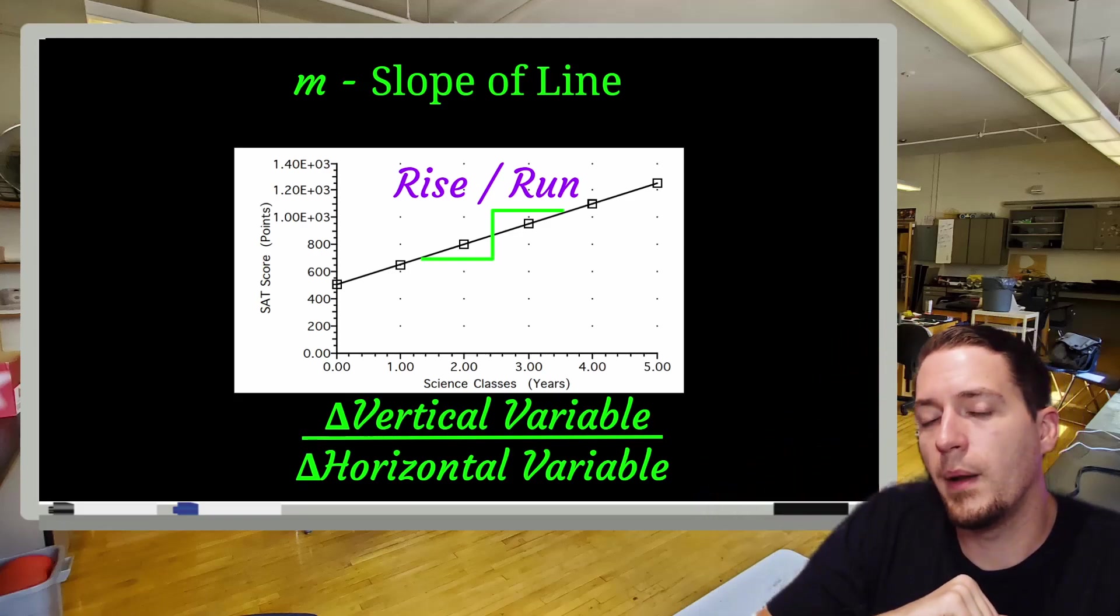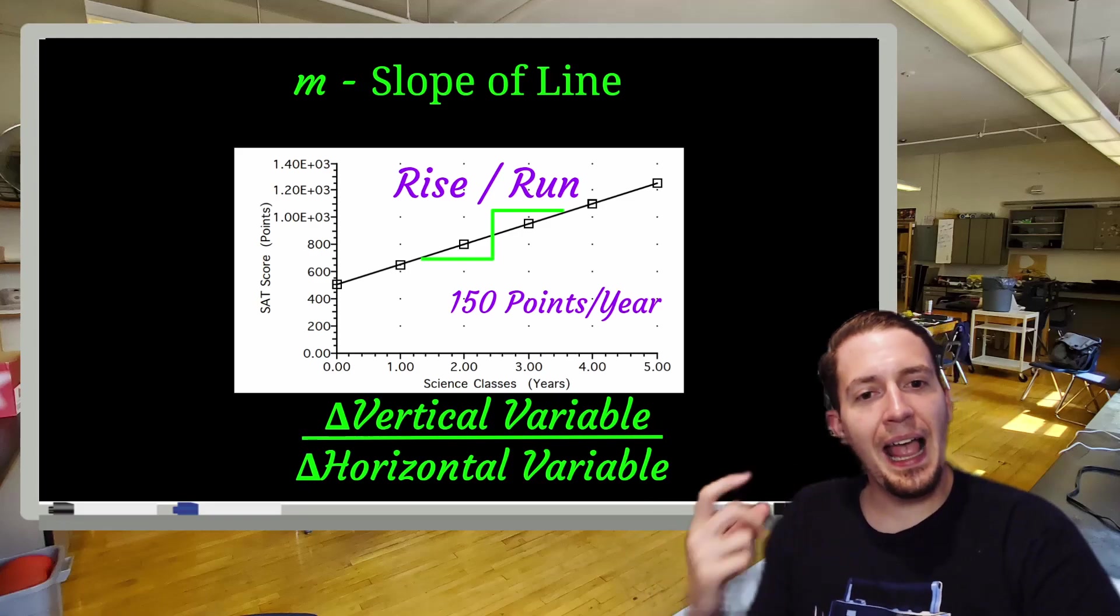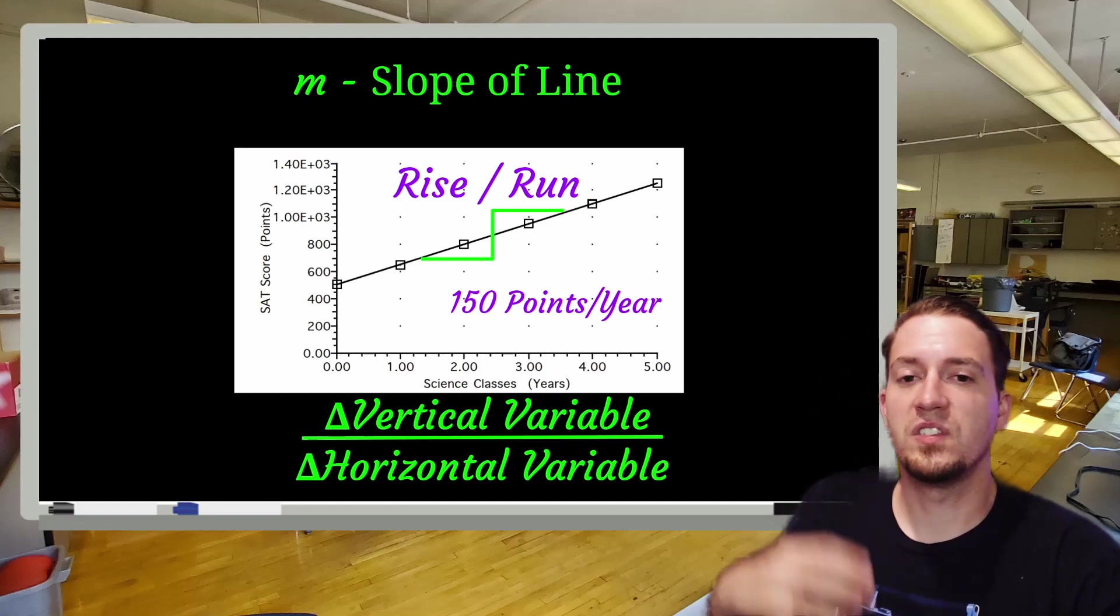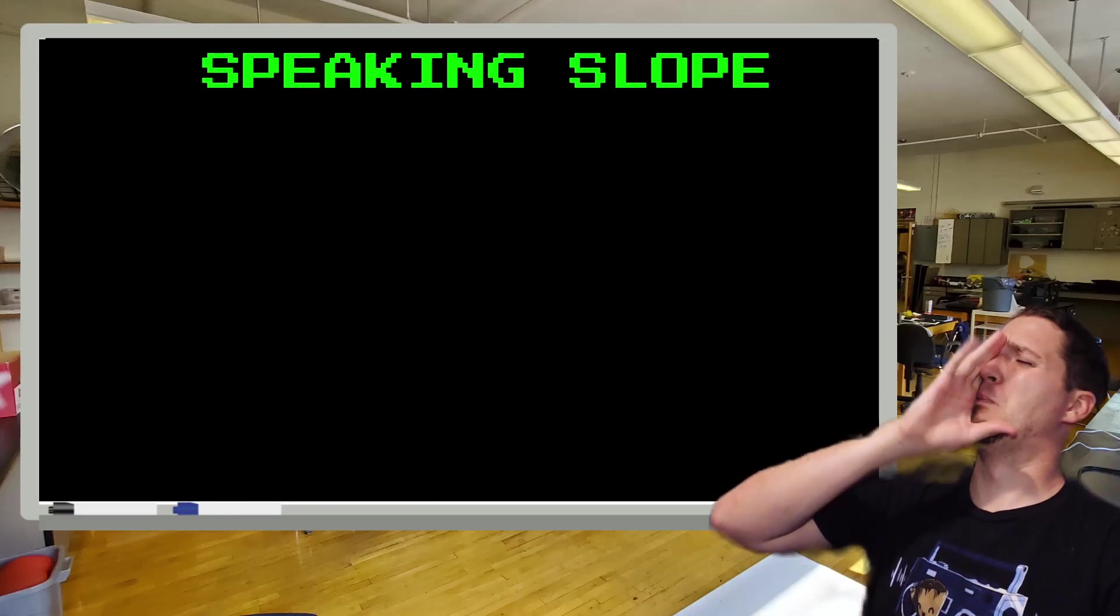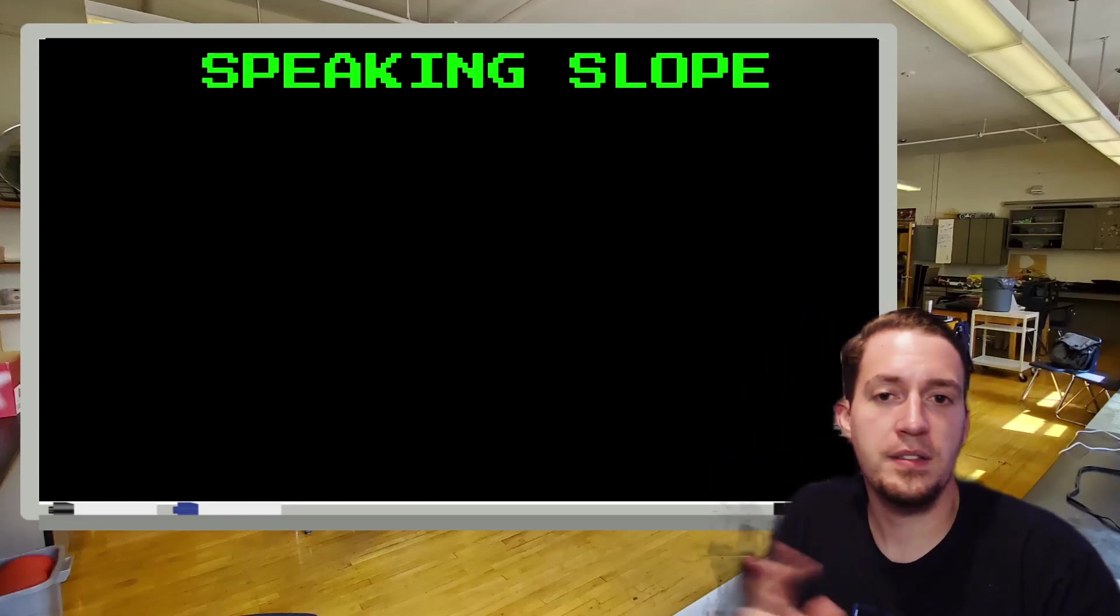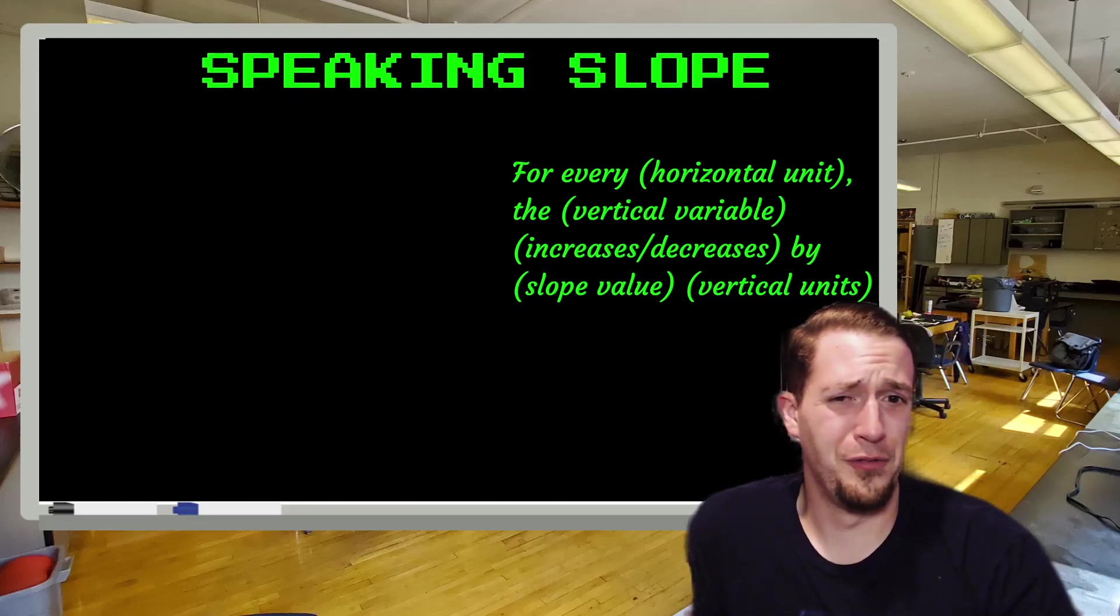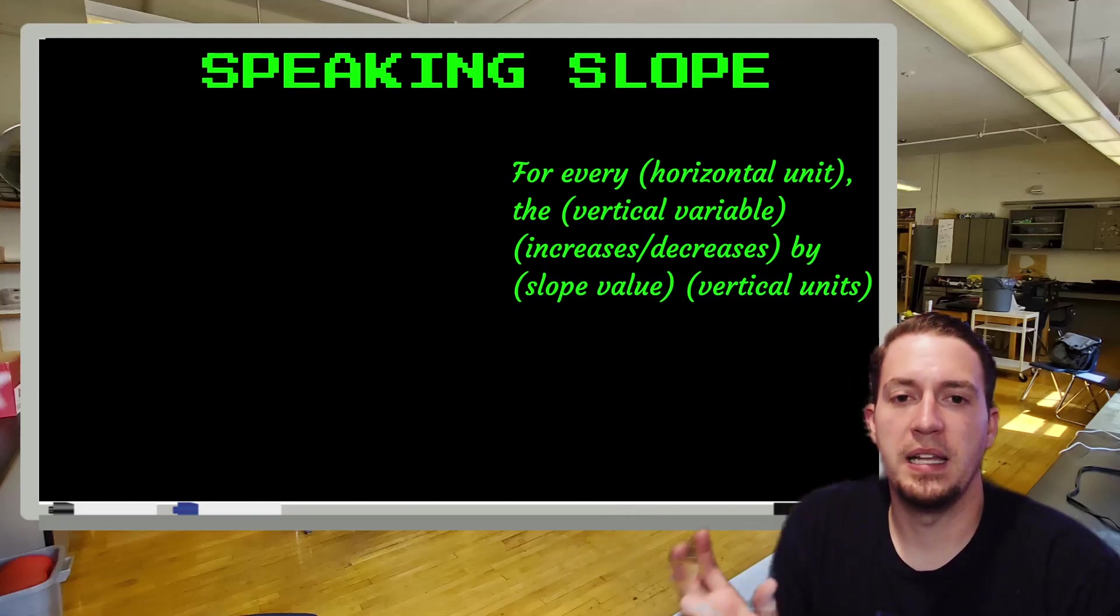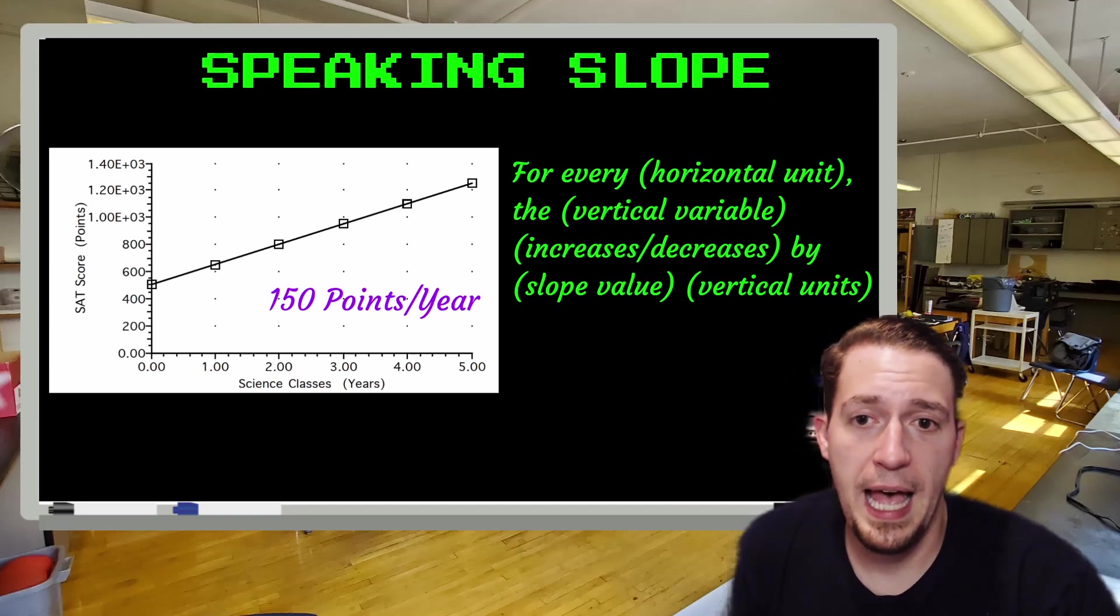So if we were to look here at these numerical values and do a little division, we would end up getting 150 points per year. Now by saying points per year, 150 points per year, I feel like it should have some meaning. The problem is if I just said someone, hey, points per year, it's like, okay. So what we want to do is we want to be able to speak the slopes in a way that makes sense to other people. So now I'm going to teach you a little trick to speaking slope. It's pretty simple. What we're going to do is we're going to say a generic sentence every single time and just play fill in the blanks with it like mad lib style. So let's get our generic sentence: for every horizontal unit, the vertical variable increases slash decreases by slope value vertical units.